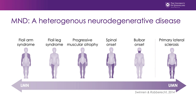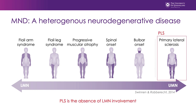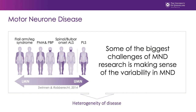For example, if a patient after four years presents with no signs of lower motor neuron deficits, they may be classed as having primary lateral sclerosis. A huge challenge in motor neuron disease research is making sense of all the different subtypes, but also the variability associated between these different subtypes. On top of that, even within subtypes of disease, there can be huge variation in the presentation as well as the progression of disease, and this brings further challenges in making sense of how to treat and help people with MND.